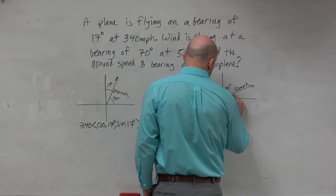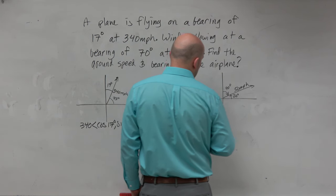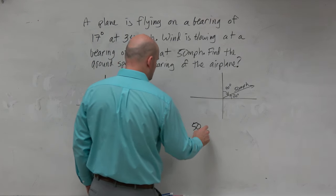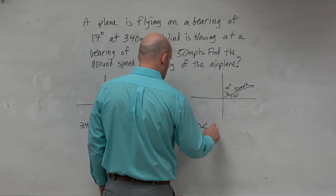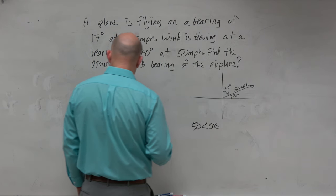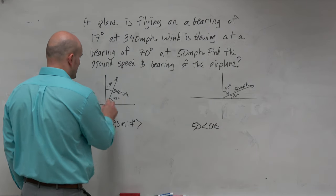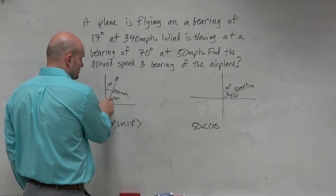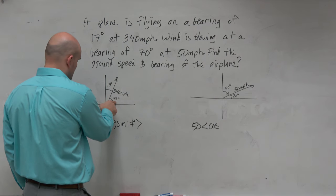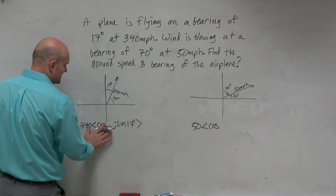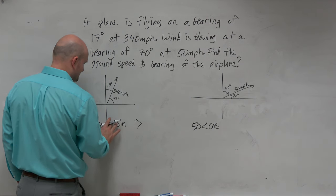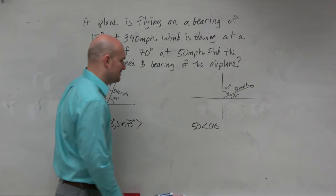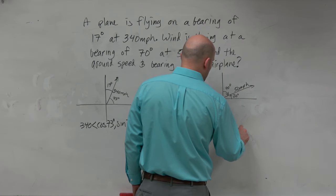Again, we don't want to use 70 degrees — we want to use 20 degrees. A student asks: shouldn't it be 73 and not 17? No, we want to take it to 90, because they're complementary angles. If that's 17, then that has to be 73. I wrote it wrong — I said something and didn't write it. So that's the cosine of 20 degrees and the sine of 20 degrees for the wind vector.